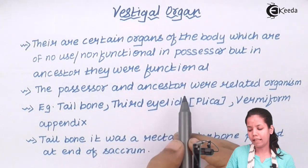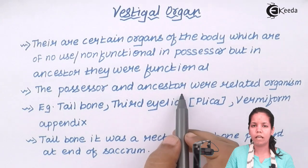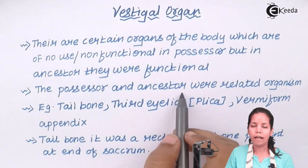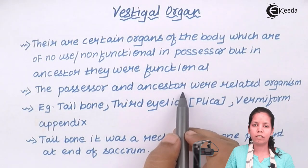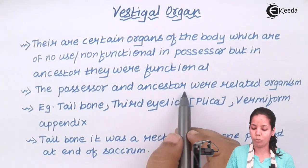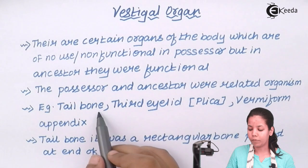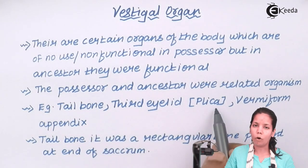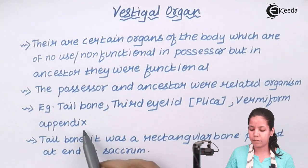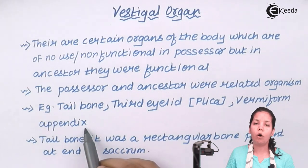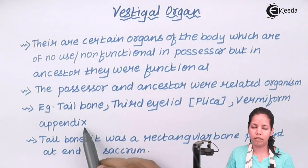The possessor and the ancestors are closely related organisms. For example, human beings — that is Homo sapiens sapiens — and apes or Peking man both had similarities and belong to common ancestors. What they had was the tailbone, third eyelid or plica in the cornea region of the eye, and vermiform appendix, which were fully functional and of great use in them. But now as modern man, we don't have their use or these organs have just evolved away.